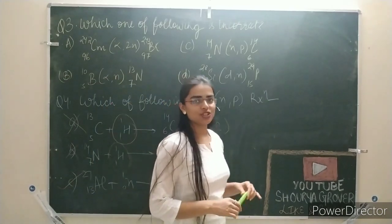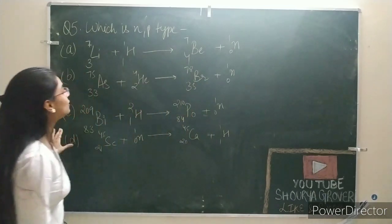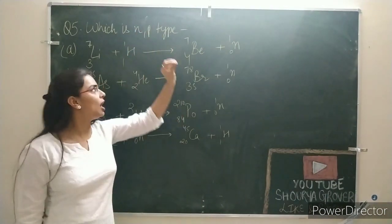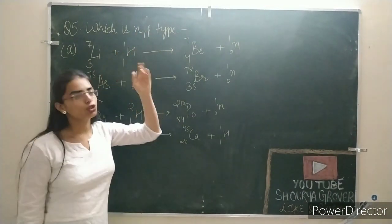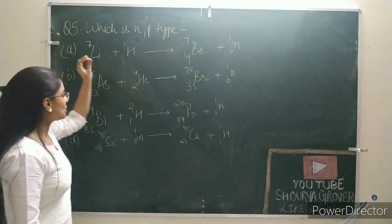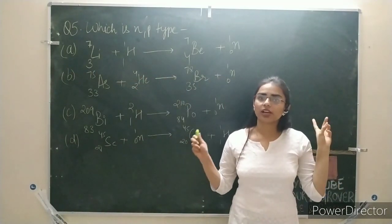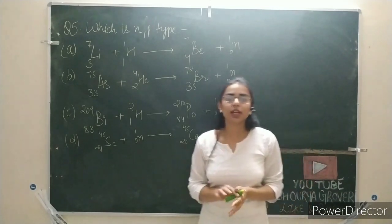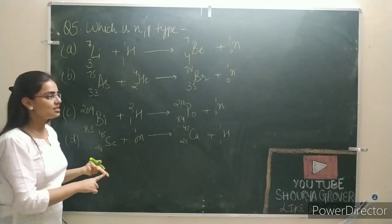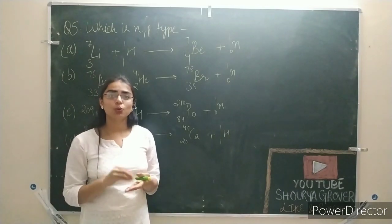Now we are going to question number 5: which is PN type? NP type means neutron bombardment and proton emitted; PN type means proton bombardment and neutron emitted. You will get the proton on the side of the reactant and neutron on the product side. This question is similar to question 4, so this is also your homework. Try yourself and let me know if the concept is clear.